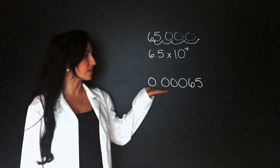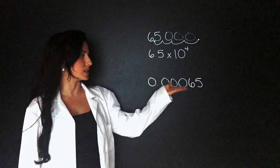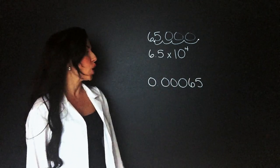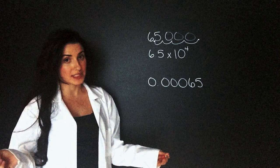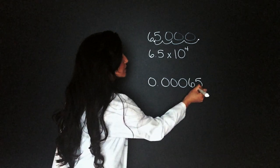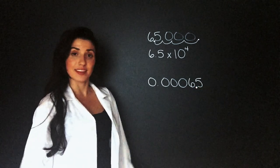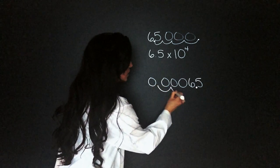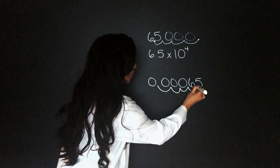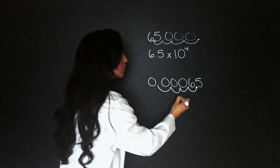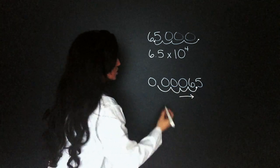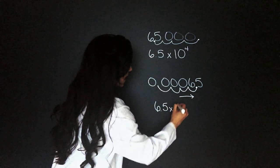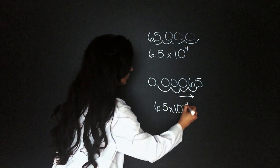Now let's say we have 0.00065. In this case, the decimal is already there. We need one digit before the decimal, so we need to move it. We count 1, 2, 3, 4 spaces, but this time we're moving to the right. So this becomes 6.5 times 10 to the negative 4.